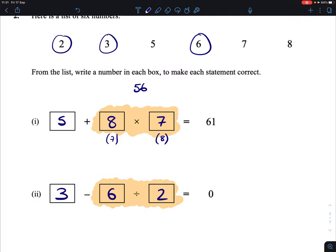Or we could put a 2 in here and do 6 divided by 3. This would work as well because 6 divided by 3 is 2, and then if we take it away from 2, we'll get 0. So two possible answers for the second one.